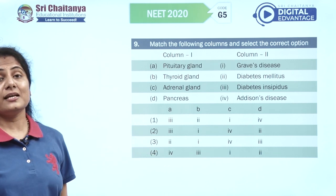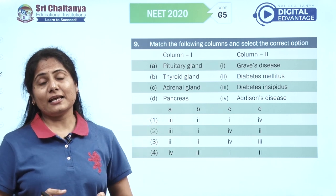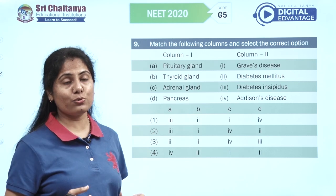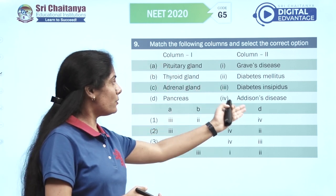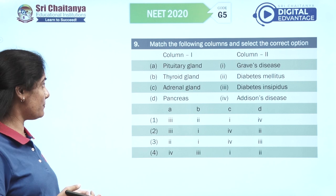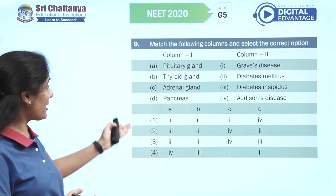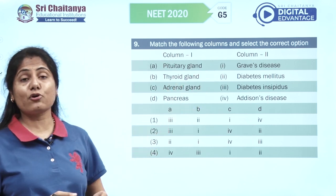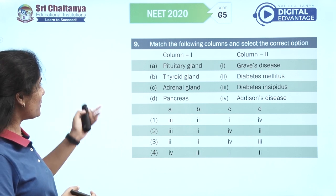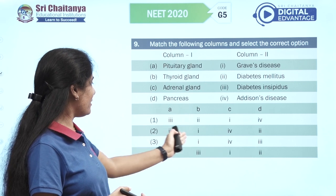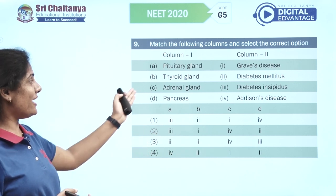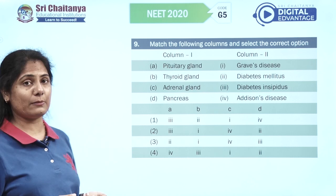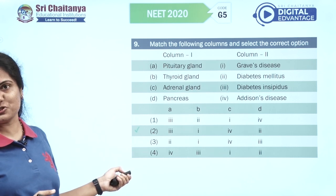The pituitary gland is associated with diabetes insipidus — it is responsible for ADH, anti-diuretic hormone, and that is why one suffers from diabetes insipidus. Thyroid is responsible for Graves' disease, which is B1. Adrenal gland is associated with Addison's disease, pancreas with insulin is associated with diabetes mellitus, so we have option two.